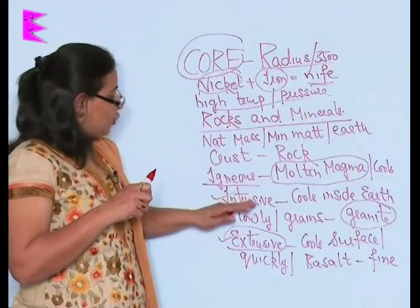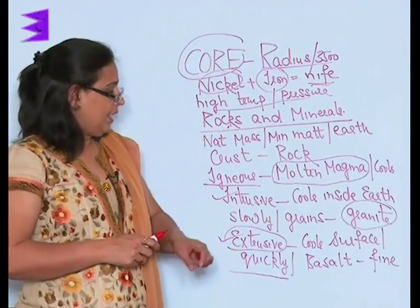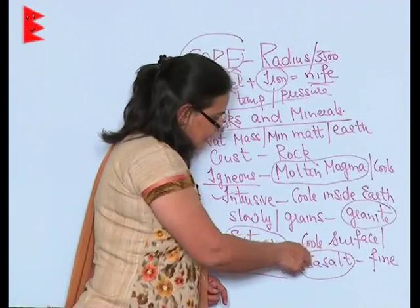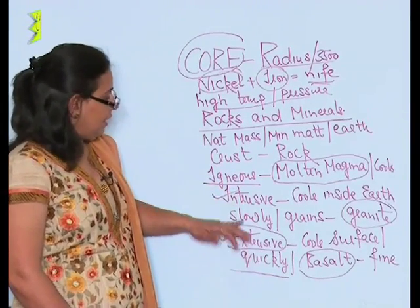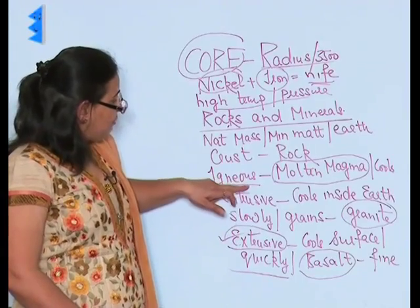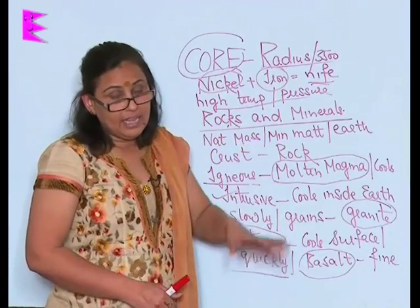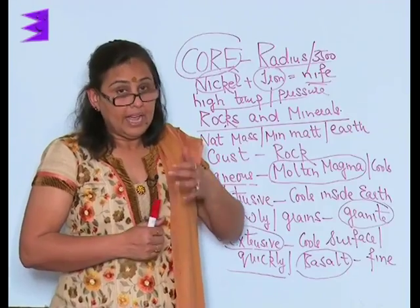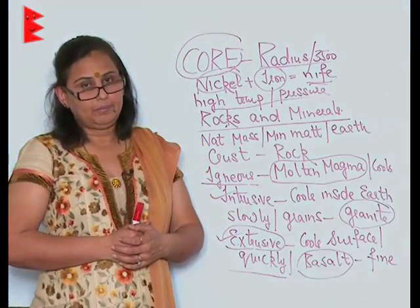In extrusive igneous rock, the magma cools very quickly, which is why it has a very fine structure. The best example is basalt. To summarize: intrusive means inside (slow formation, coarse grains), extrusive means outside (quick formation, fine grains). The word 'igneous' comes from the Latin word meaning fire, because it is made from molten magma.